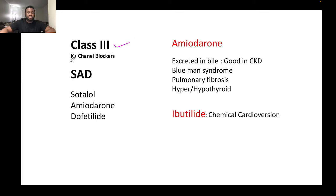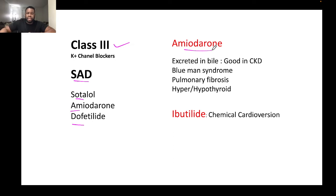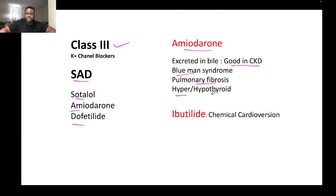Class 3 antiarrhythmics are potassium channel blockers, with the mnemonic SAD: S for sotalol, A for amiodarone, and D for dofetilide. Amiodarone is excreted in the bile, making it suitable for patients with chronic kidney disease. It can cause blue-man syndrome — where the patient's face turns blue. It has a very long half-life, so its effects can persist for about a month after stopping. Amiodarone can also cause pulmonary fibrosis, hyper- or hypothyroidism, and liver injury.